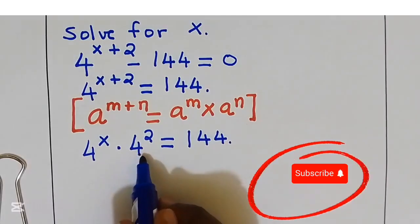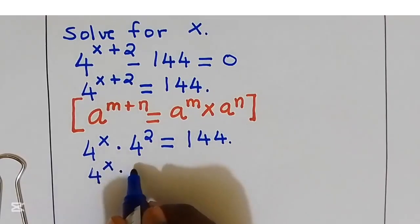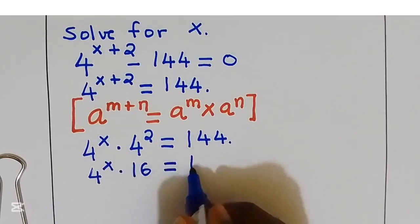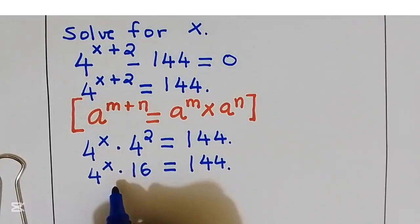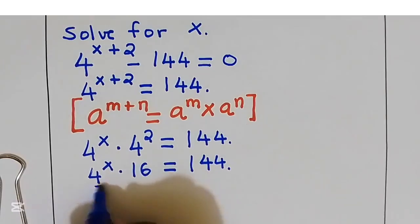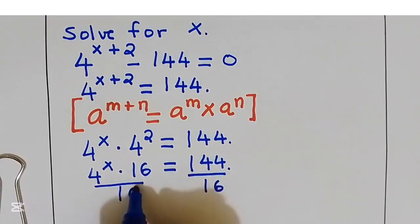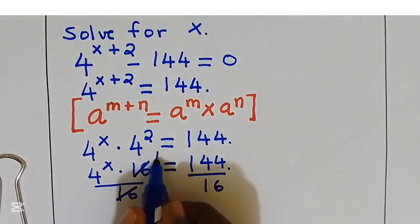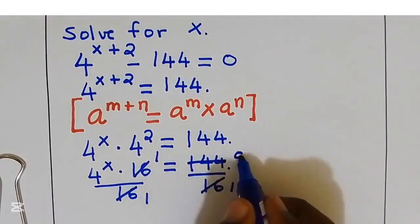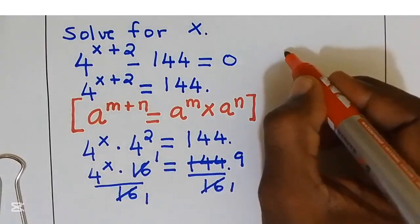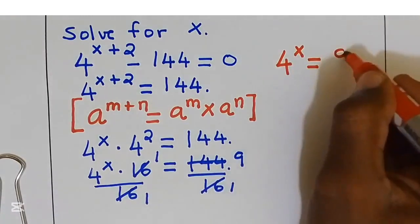4 squared is equal to 16. We will divide both sides by 16 — dividing the left side by 16 gives 1, and dividing 144 by 16 gives 9. So now 4 to the power of x is equal to 9.